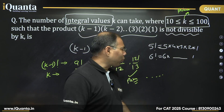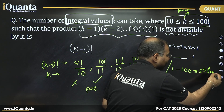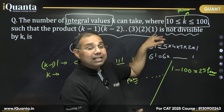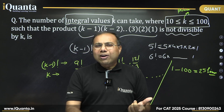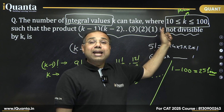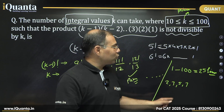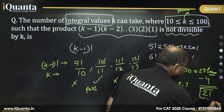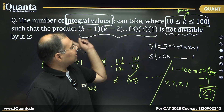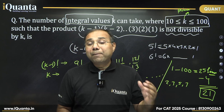From 1 to 100, there are exactly 25 prime numbers — a well-known fact asked in many exams. But our range starts from 10, so we subtract the primes below 10, which are 2, 3, 5, and 7 — exactly 4 primes. Therefore, 25 − 4 = 21. The number of integral values of k in the range 10 to 100 that satisfy the condition is 21. I hope this clarifies a lot. Thank you.